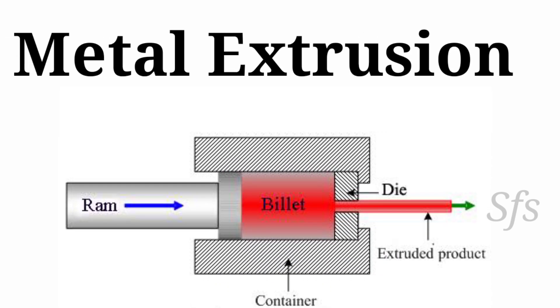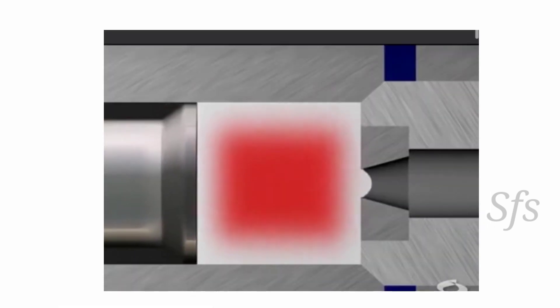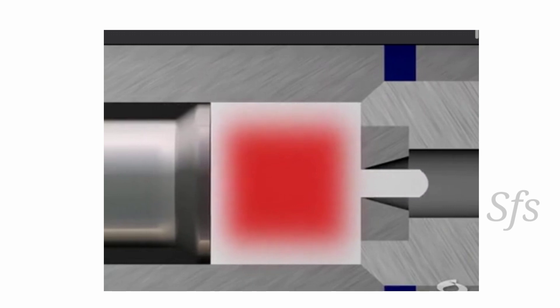Hello friends, Superfast Study and Experiment welcomes you. In this video we discuss the metal extrusion process, which is a manufacturing process through which various metal products like rods, pipes, and tubes of various cross sections are manufactured. With the help of an animated video clip we will understand the complete procedure of the extrusion process.